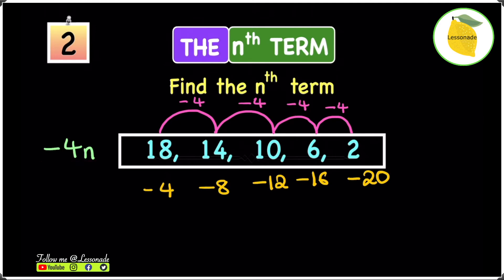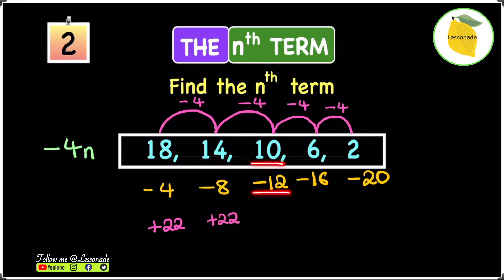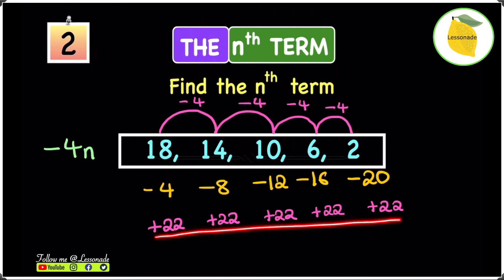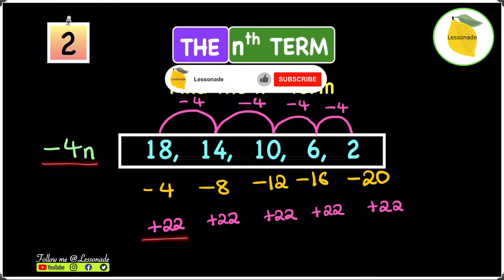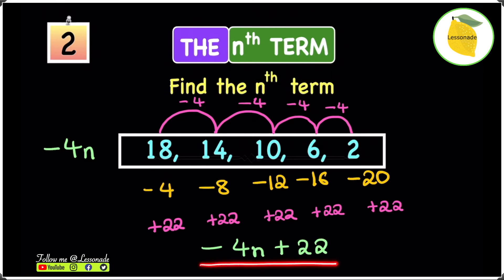Now we find the difference between the times table and the linear sequence. To get from minus 4 to 18 you add 22, from minus 8 to 14 you add 22, from minus 12 to 10 you add 22, from minus 16 to 6 you add 22, and from minus 20 to 2 you add 22. So we're adding 22 each time. We combine minus 4n with plus 22, giving us minus 4n plus 22 as our nth term.